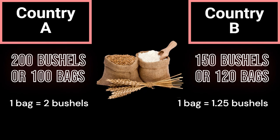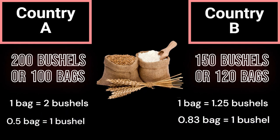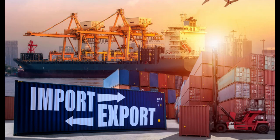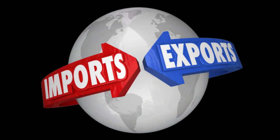Comparative advantage analysis: Country A has a lower opportunity cost of producing rice at 2 bushels of wheat per bag, compared to country B at 1.25 bushels of wheat per bag. Country B has a lower opportunity cost of producing wheat at 0.83 bags of rice per bushel, compared to country A at 0.5 bags of rice per bushel. Based on this analysis, country A has a comparative advantage in producing rice, while country B has a comparative advantage in producing wheat. Therefore, it would be beneficial for both countries to specialize in the good in which they have a comparative advantage and trade with each other. Country A can focus on producing rice and export it to country B, while country B can specialize in producing wheat and export it to country A. This way, both countries can benefit from trade and enjoy a more efficient allocation of resources.